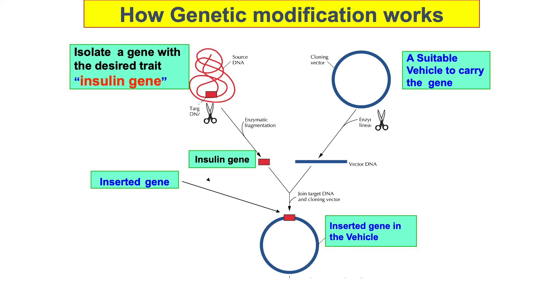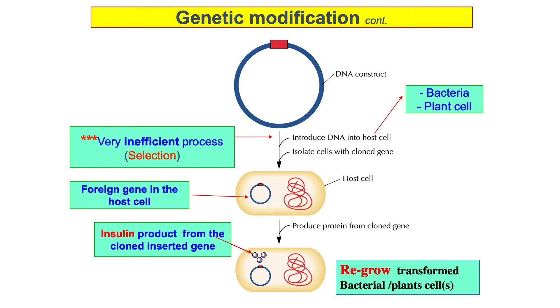Many of us know insulin as a drug used by relatives who are diabetic. In the medical field, where all this modification started, a gene for insulin was isolated and transferred to a vehicle, then introduced into a bacteria. The bacteria acts as a factory to multiply the insulin, which can then be packaged and used by those who need it.